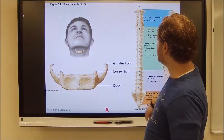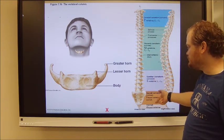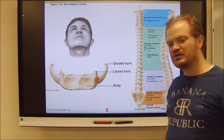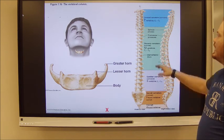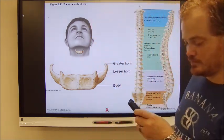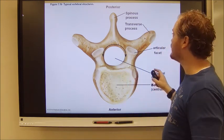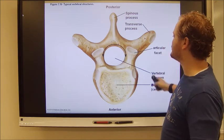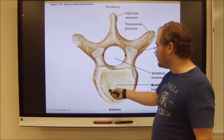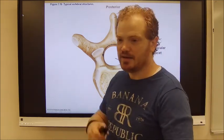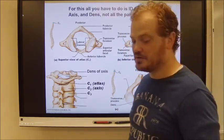You need to know that you have seven cervical, twelve thoracic, five lumbar, five fused sacral, and four fused coccygeal vertebrae. All vertebrae have spinous processes and transverse processes. All vertebrae have a vertebral foramen that the spinal cord goes through, and almost all have a vertebral body with an intervening pad of fibrocartilage for articulation.